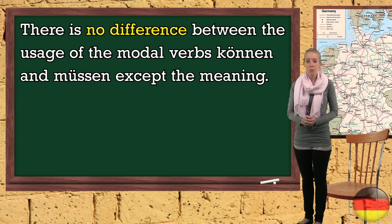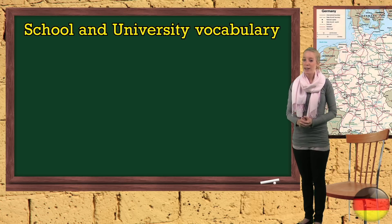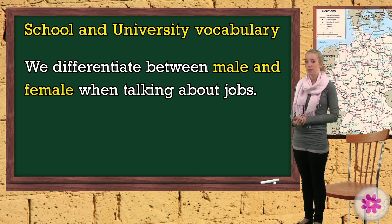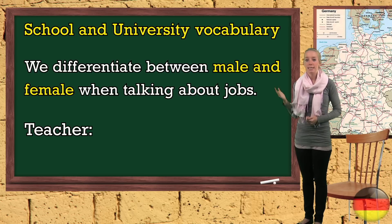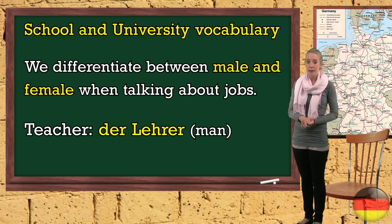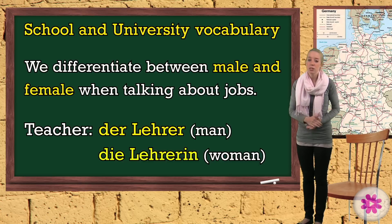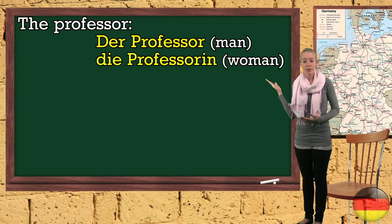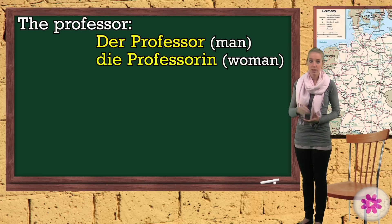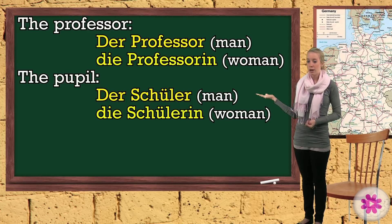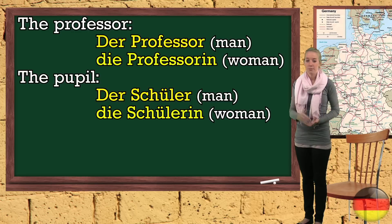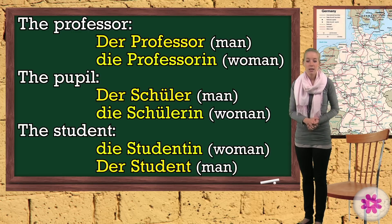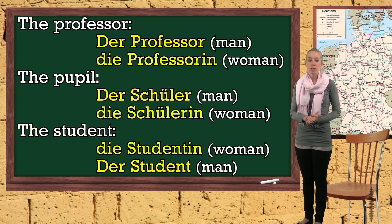Let's see some vocabulary on our topic — school and university. First of all, in German we differentiate between male and female when talking about jobs. 'The teacher' is der Lehrer if he is a man, and die Lehrerin if she is a woman. The same happens for 'the professor': der Professor, die Professorin. 'The pupil': der Schüler, die Schülerin. 'The student': der Student, die Studentin.